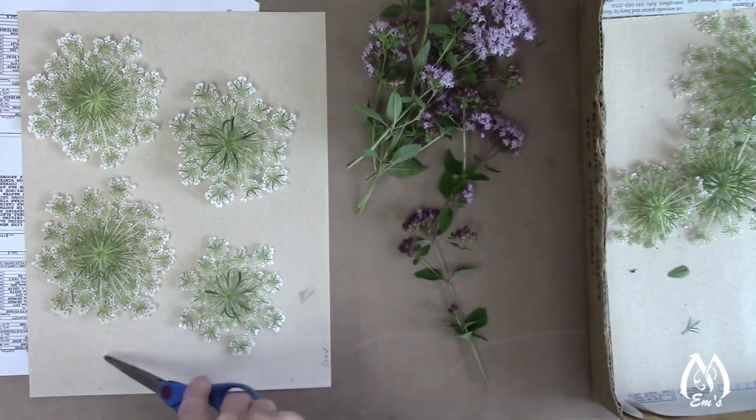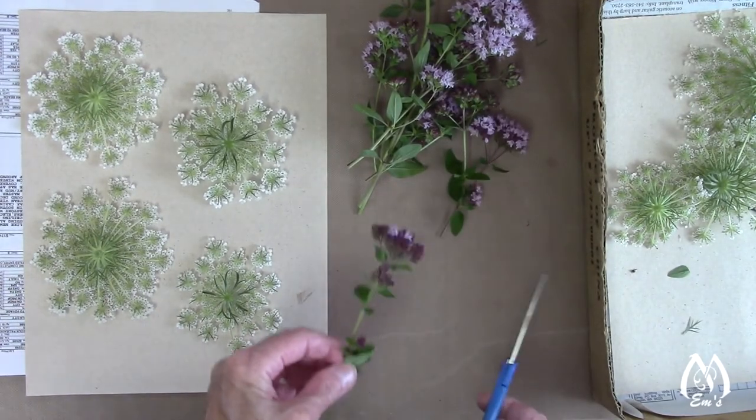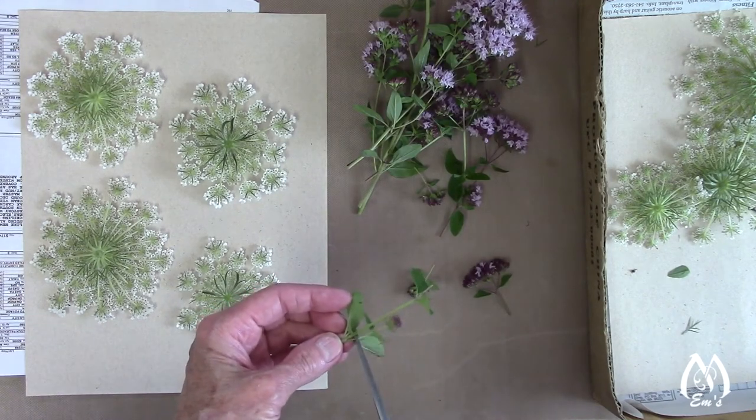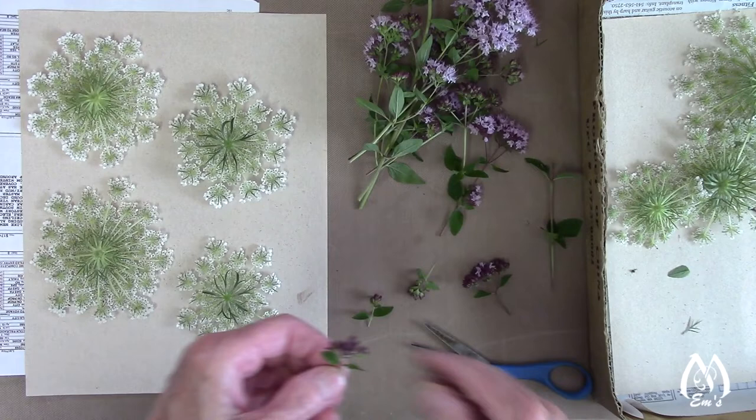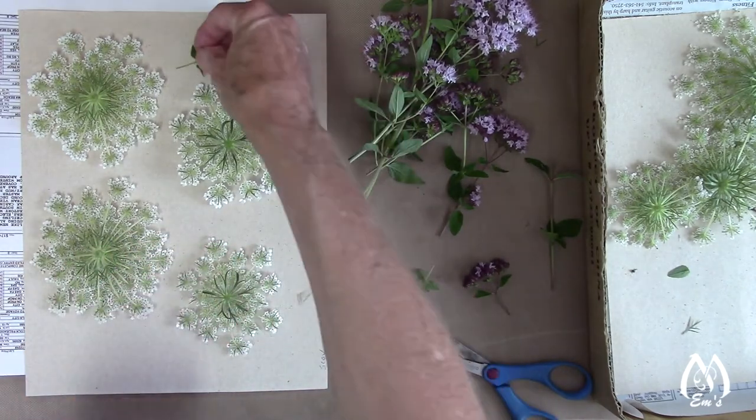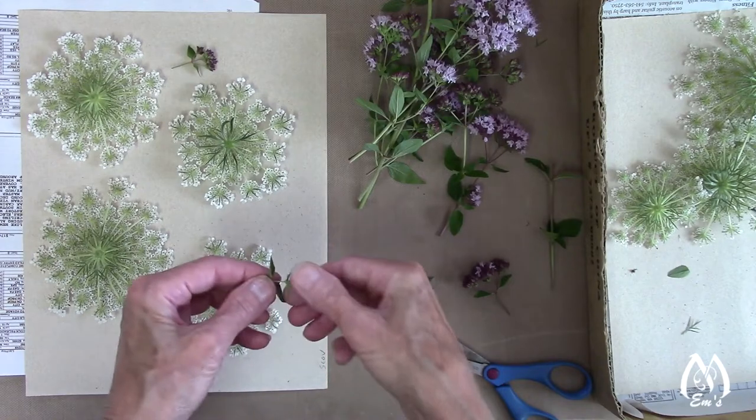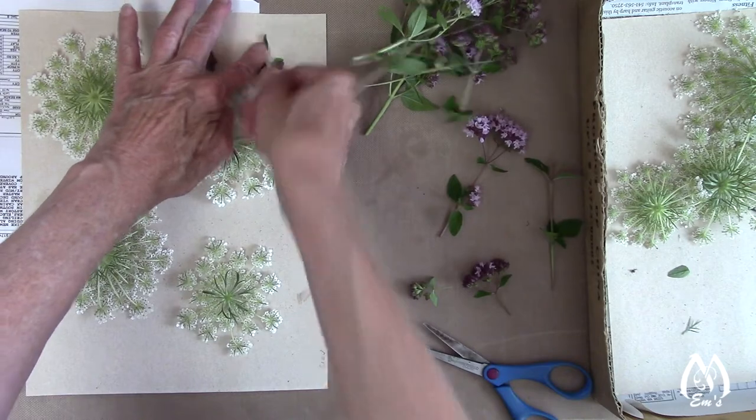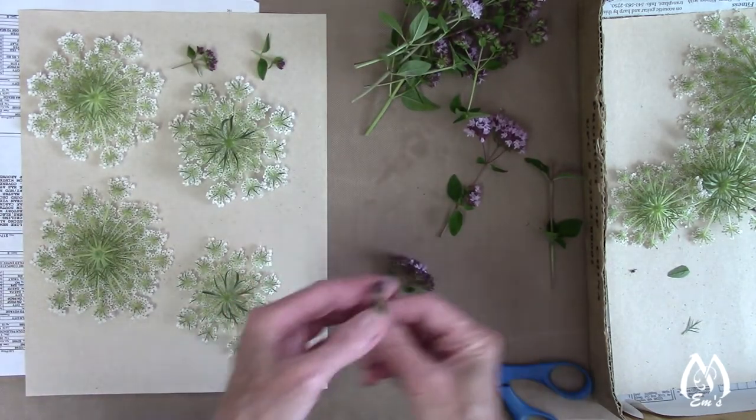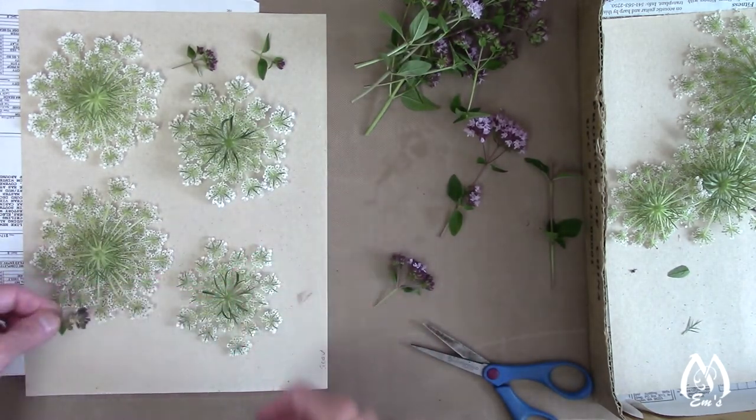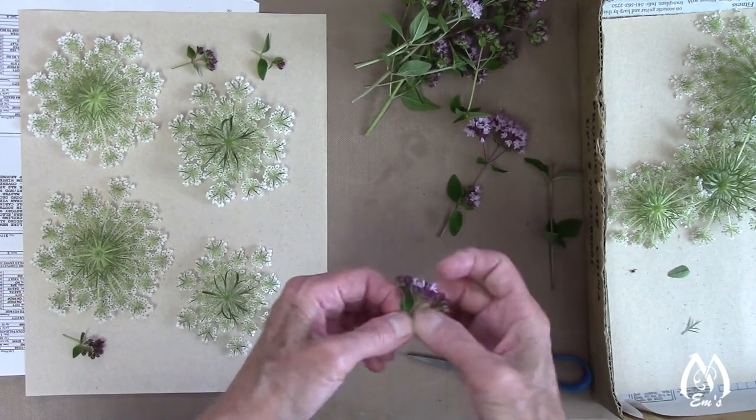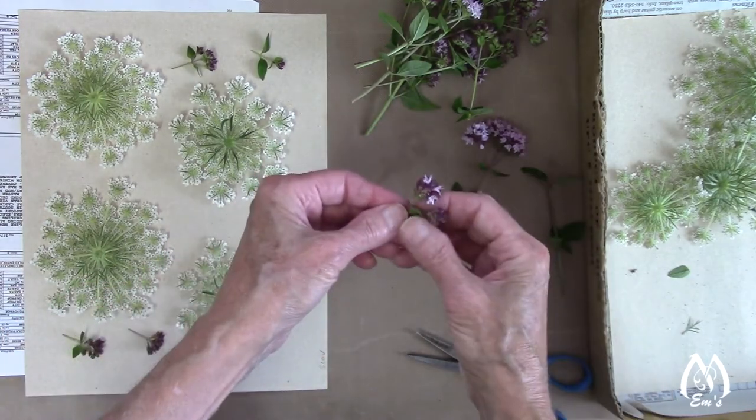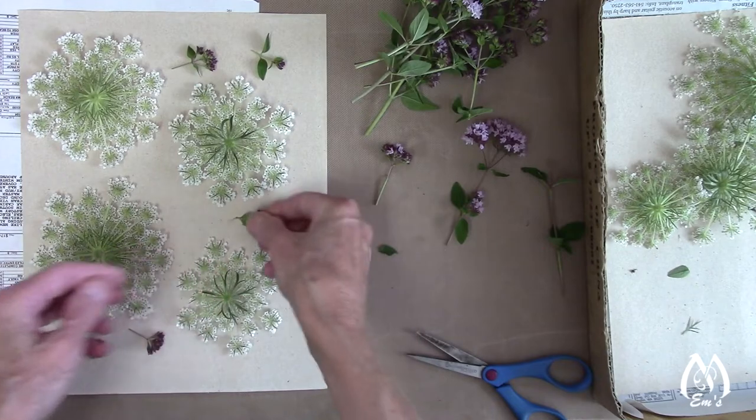Now to fill in a couple of these spots that are left, I will go ahead and take my oregano and just cut some of these smaller pieces off. And then use them to fill in. Just so I'm not leaving a bunch of wasted space there. Okay, I think I'll just do one more small little piece.